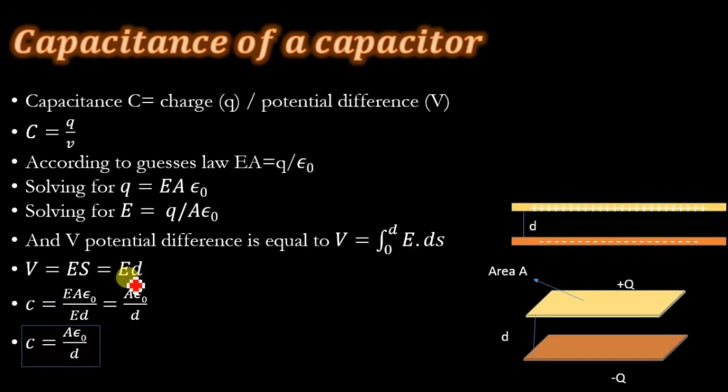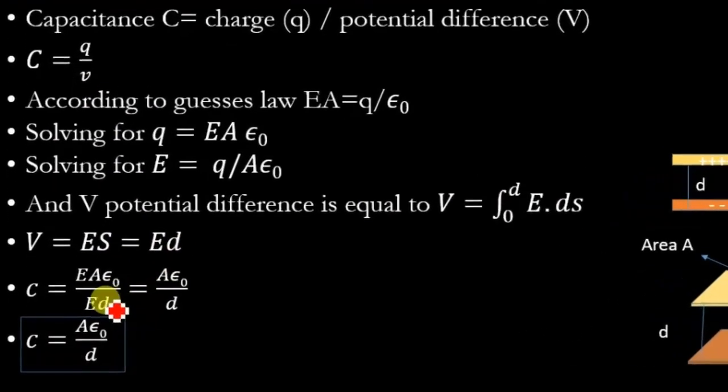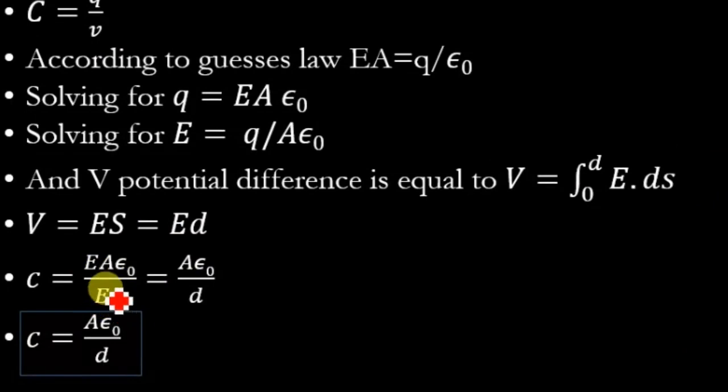Where E is the electric field due to this plate and d is the distance of separation between these two plates. Now we know that the capacitance C = Q/V. Putting the value for Q, which is equal to EA𝜀₀, and for V, which is equal to Ed, we will get EA𝜀₀ divided by Ed. This E will cancel out with this E.